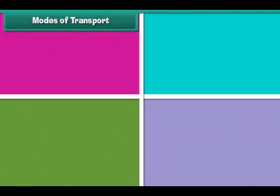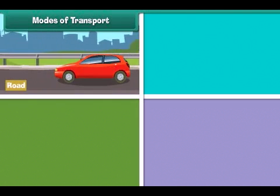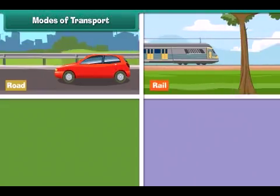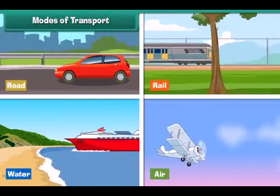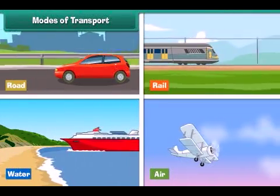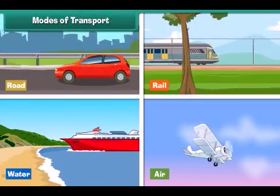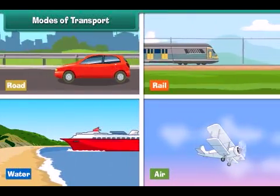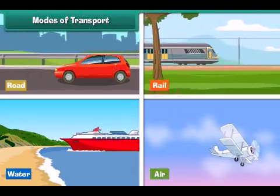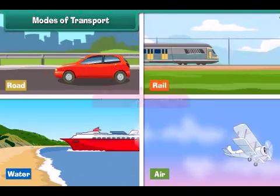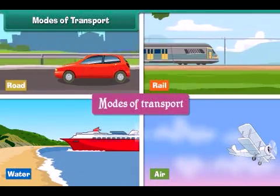Modes of transport: Goods, animals and people can be transported by road, rail, water or air. Different mediums used for transportation are known as the modes of transport.